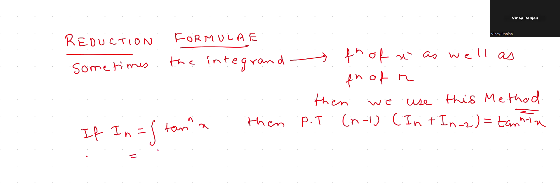This can be written as tan^(n-2)x into tan square, which can be written as sec square x minus 1 dx. And once you will be able to do that...